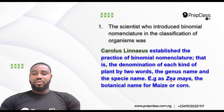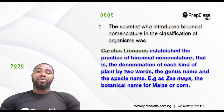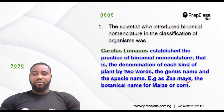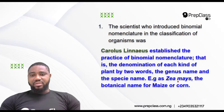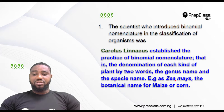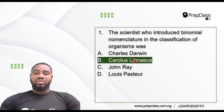So these two names — the first one is from the genus, the second one is from the species. When you are writing botanical names for living organisms, make sure that the genus starts with a capital letter and the species with a small letter. You have to separate them with a space. If you are typing it, you can type it in italics. But if you are writing it in a book, you must underline the genus separately and underline the species separately. So the answer is Carlos Linnaeus.